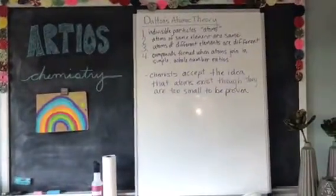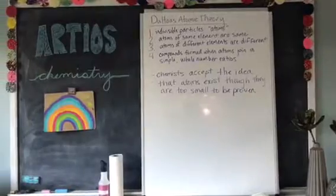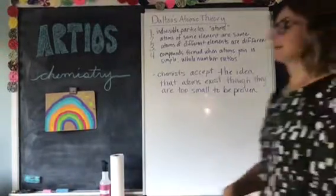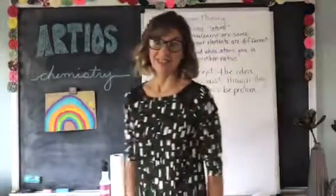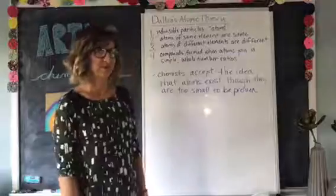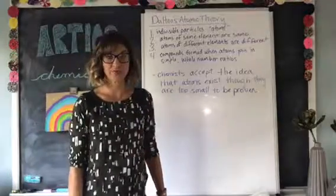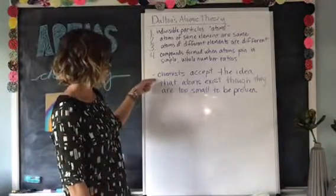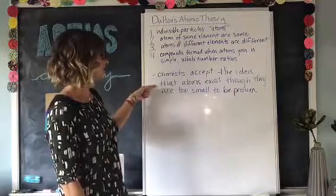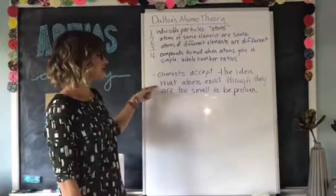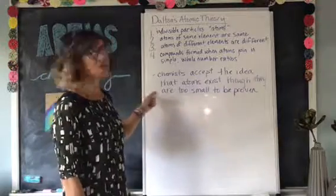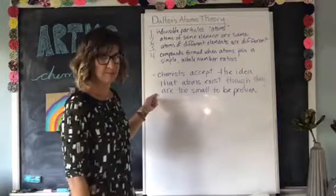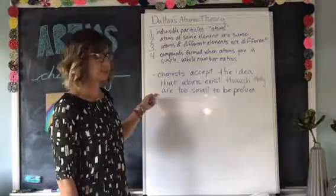John Dalton, brilliant chemist, came up with this theory. It's a theory — we can't actually prove it because atoms are too small. Chemists accept the idea that atoms exist, though they are too small to be proven. But let's back up and take a look at his theory.